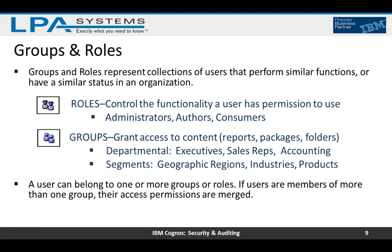Roles represent or control the functionality a user has permission to use — for example, Administrator, Author, and Consumer are all roles. Groups are granted access to content, so being a member of a group grants access to reports, packages, or folders. This can be at a departmental level such as Executive, Sales Reps, or Accounting, or via segments like geographic regions, industries, or products. A user can belong to one or more groups or roles.